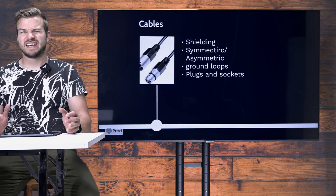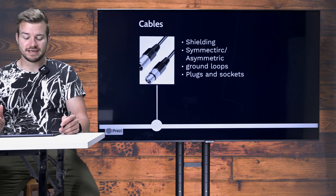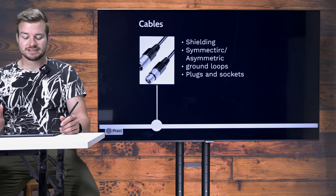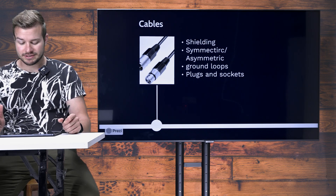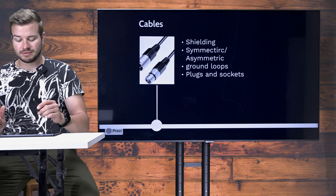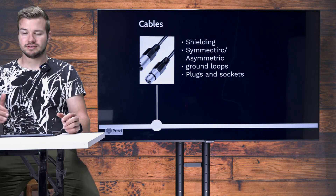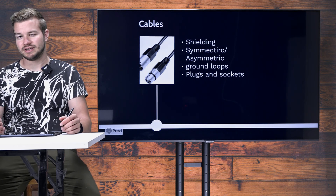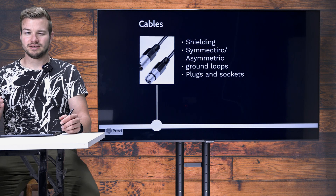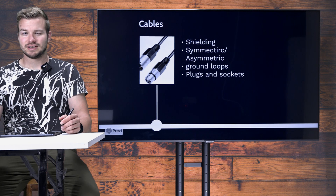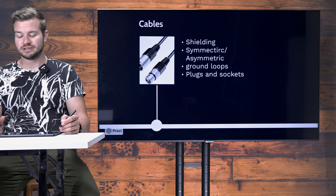We also discussed in unit 2 what cables we use to transfer signals through the signal chain. We talked about symmetric and asymmetric cables, ground loops, different plugs and sockets, what shielding is and why we need it, and why a symmetric signal is so important when it comes to interference.